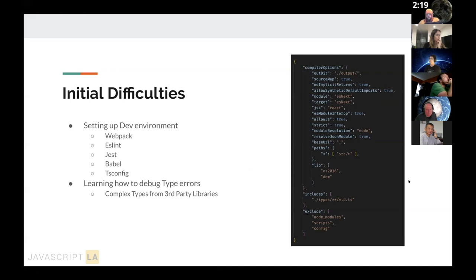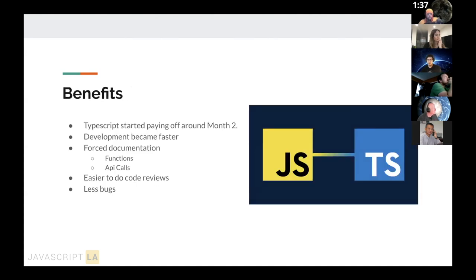Just working through all the tsconfig documentation was a lot — it's not something you'd need to do initially when learning TypeScript. He suggests anyone playing with TypeScript on their own just use Create React App with the TypeScript template to avoid all that setup. Since it was a company project, they wanted control over everything. They also had to learn how to debug type errors, especially from third-party libraries — TypeScript errors are very long and wordy.